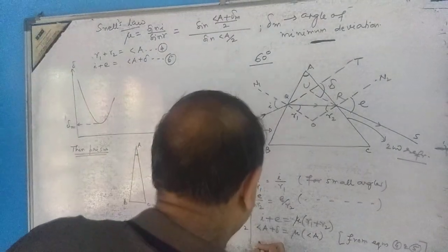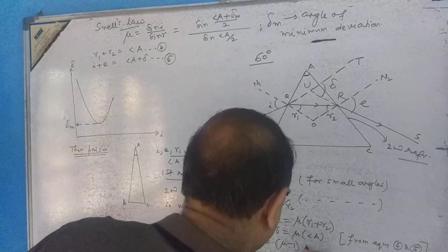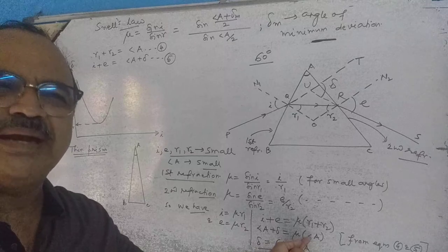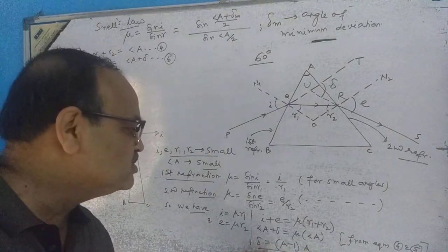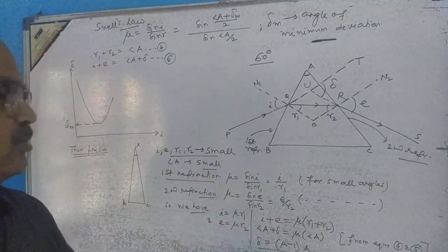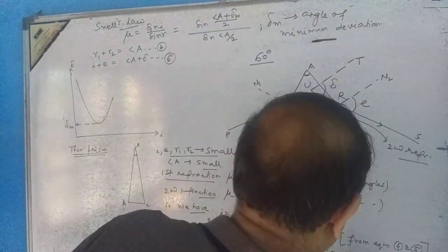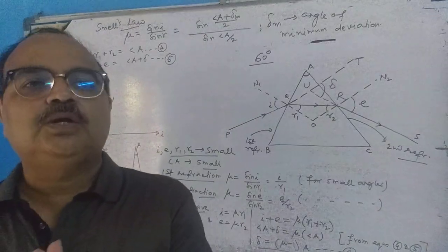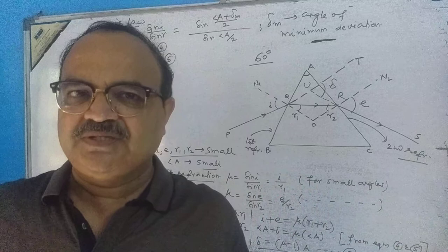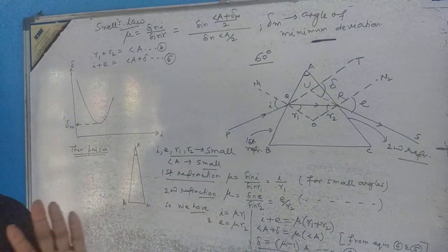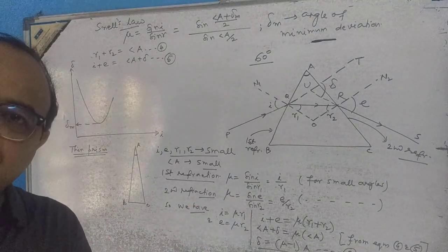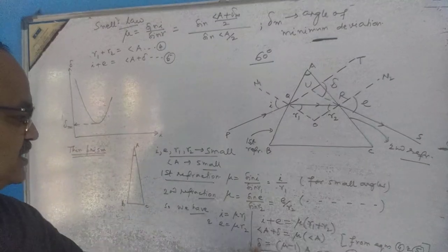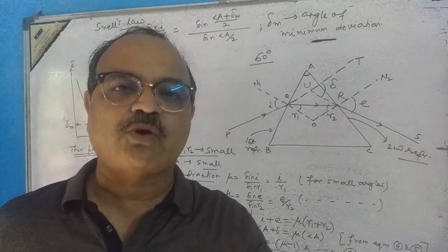Therefore, delta equals (mu minus 1) times A. This is equation number 6. This equation will always be applicable for the thin prism. If we are told about a thin prism — or if it is stated that the angle of the prism is very, very small — we must use this formula. Equation 6 is exclusively used for thin prisms.